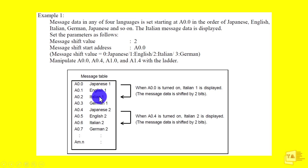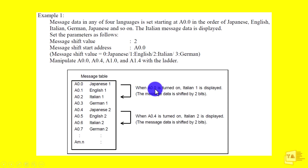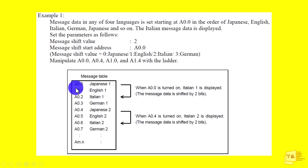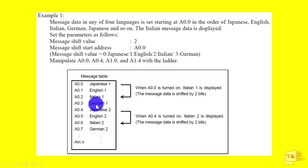Italian display: shift value is 101 red, shift start address A0.0. For Italian, A0.0 turns on — the message is shifted two bits. Starting from 1, 2 — shift to A0.2. Display A0.2 — this is German display.